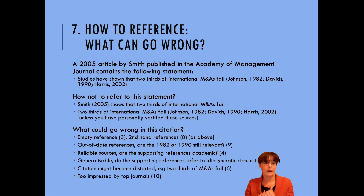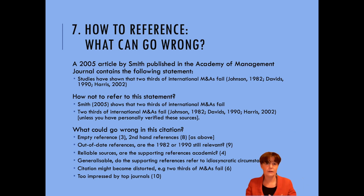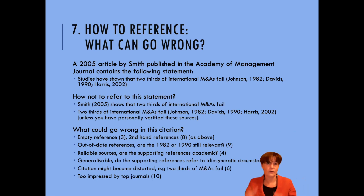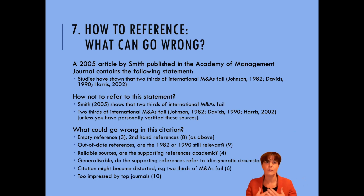You shouldn't use second-hand references — references that someone else has found. There might be other things that can go wrong. Let's assume this is a 2005 article and you're using it in your thesis in 2020. Are references from 1982 and 1990 still relevant? They might already have been a bit old in 2005, but in 2020 they are really old. So can we still be sure that two-thirds of international mergers and acquisitions fail in 2020? Maybe they're far less, or maybe more — you don't know until you look at more recent evidence.